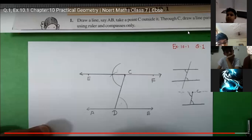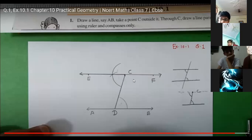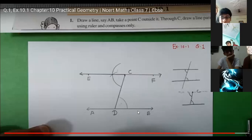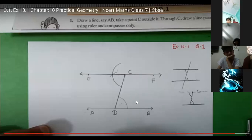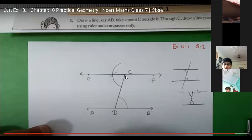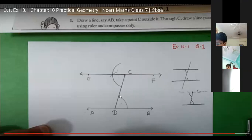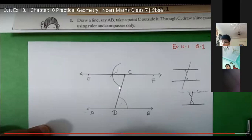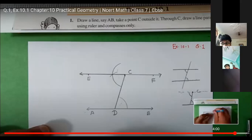Listen to me very carefully. You have to draw a line AB first of all, then take a point C outside it. Join line AB and mark a point D on it. Then with any radius, take your compass and draw an arc from point D. With the same radius, draw another arc from point C. Now measure these two points with the help of the compass, then keep your needle at the arc on C's side and draw the cut.